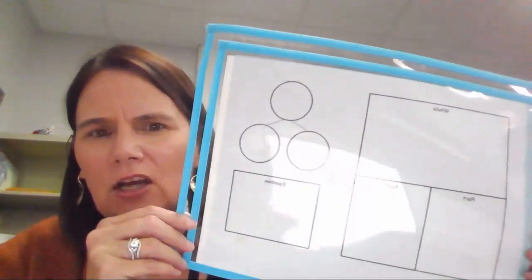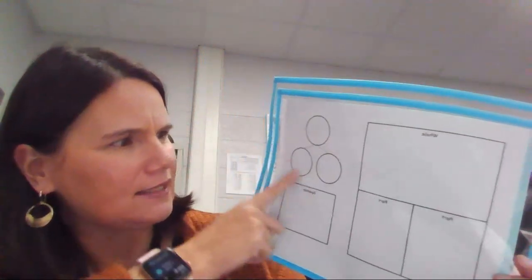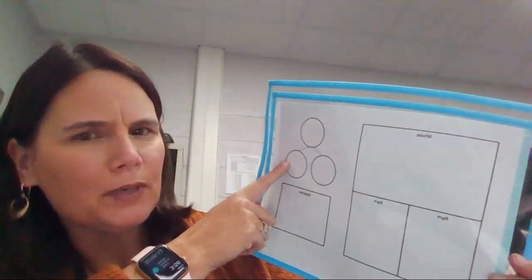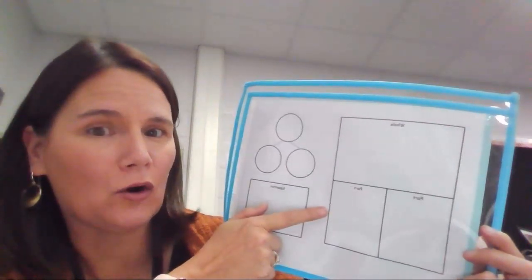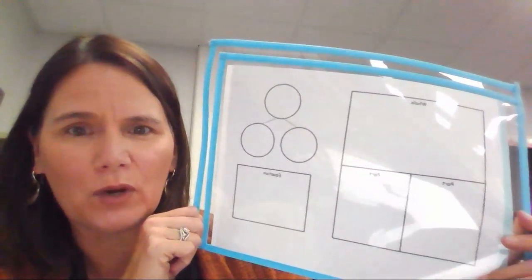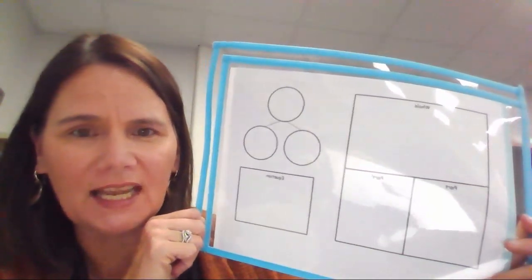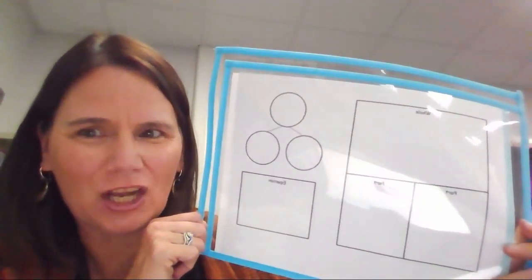Think about what you already know and what was given to you in the problem. You can also use the mat that has the number bond and the part-part-whole mat. Take a picture of what you've done and then send it to your teacher. Great job!